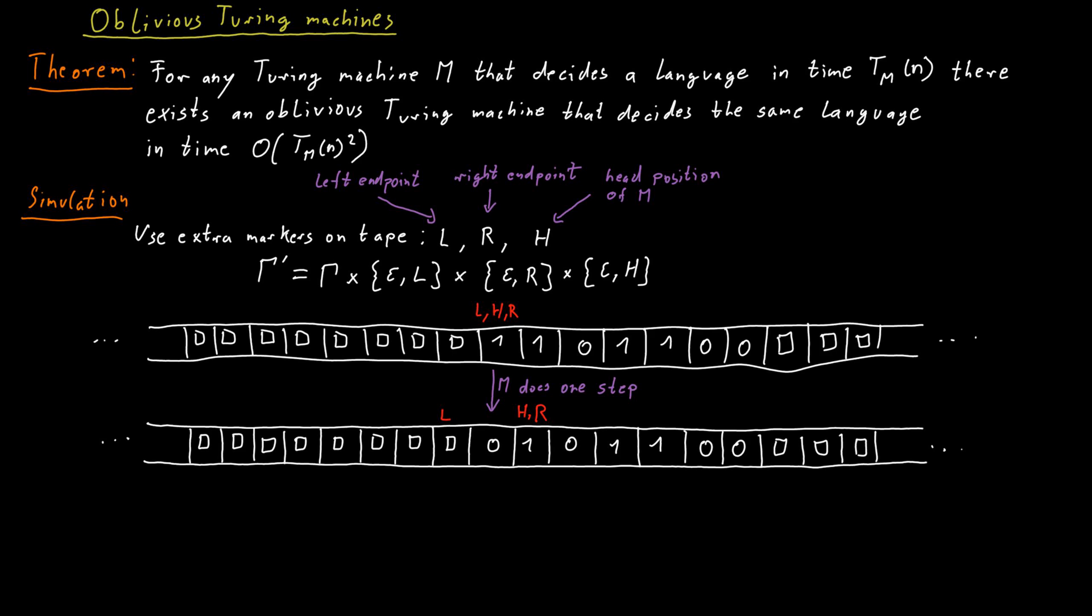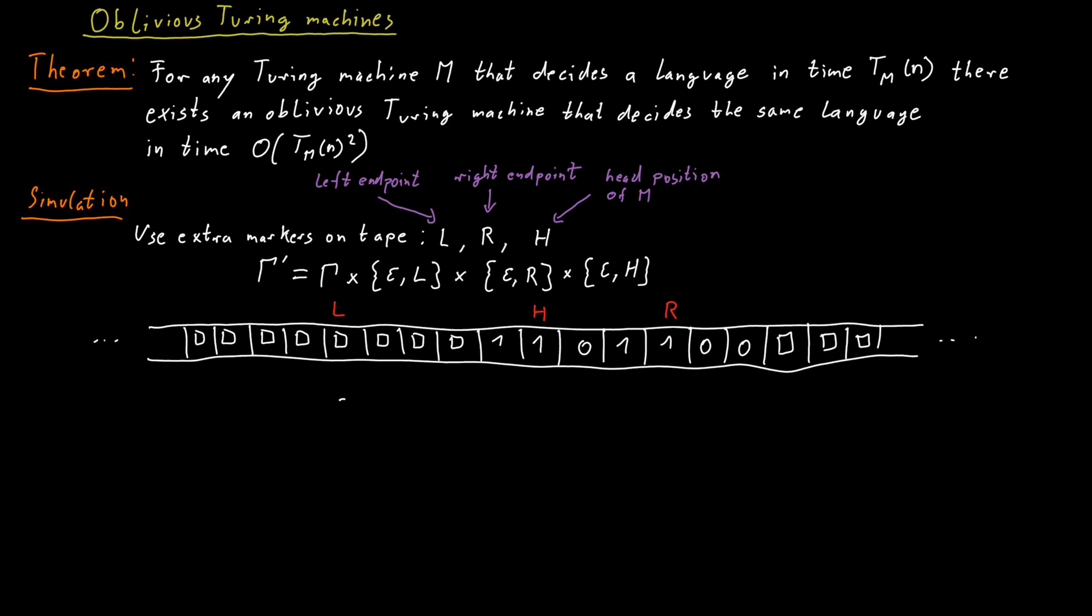To simulate a single step, we will now do the following. We move from the leftmost marker to the rightmost marker until we encounter the marker H. At this point, we read what original symbol there is on the tape at this position, because that is what the Turing machine M would read in this step. We look up in the transition function what the internal state and this symbol we just read tells us to do. We write a new symbol according to what the transition function says. We switch our internal state. And finally, we have to move the head position.